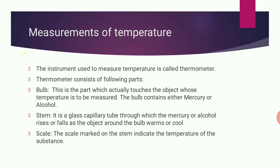Measurements of temperature: the instrument used to measure the temperature is a thermometer. It consists of the following parts: bulb, stem, and scale. The bulb is the part which actually touches the object whose temperature is to be measured. The bulb contains either mercury or alcohol.